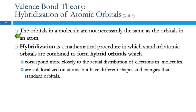The orbitals in a molecule are not necessarily the same as the orbitals in an atom — they can be changed by that interaction. Hybridization is a mathematical procedure in which you take two standard atomic orbitals and combine them to form hybrid orbitals. They're not like either of the original things — that's why they're a hybrid. They're kind of parts of both, like a hybrid vehicle can run on gasoline and electricity. The hybridization is going to correspond more closely to the actual distributions of electrons we observe in molecules.